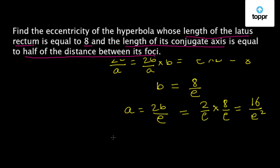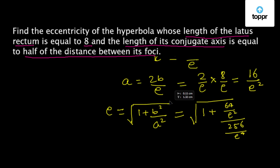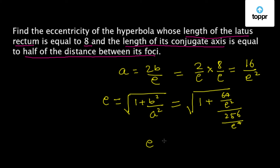The eccentricity of the hyperbola is given by E = √(1 + b²/a²). Substituting b = 8/E and a = 16/E², we get E = √(1 + (64/E²) / (256/E⁴)) = √(1 + 64E²/256) = √(1 + E²/4). Solving this gives E = 2/√3, which is the eccentricity of the hyperbola.